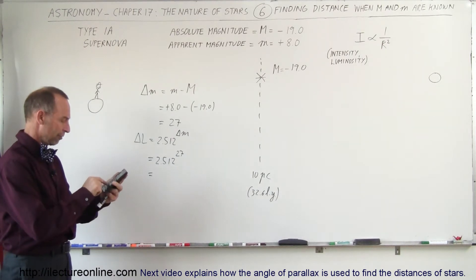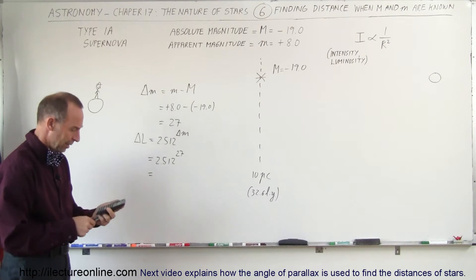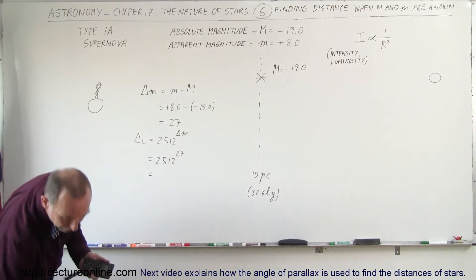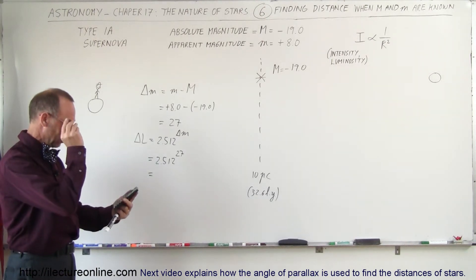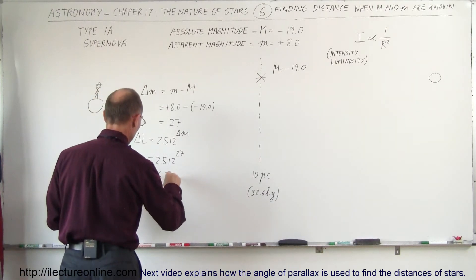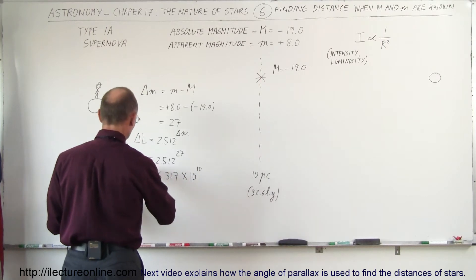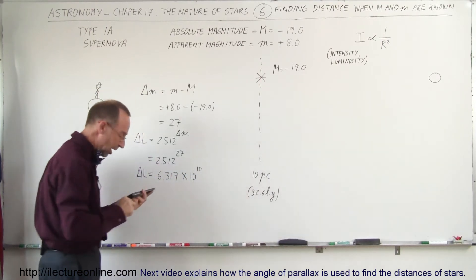Let's find out how big that number is. That's probably a very big number. So 2.512 raised to the 27 power, and we get 6.317 times 10 to the 10th, and that would be the difference in the luminosity.